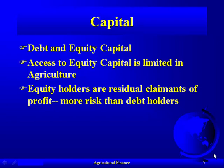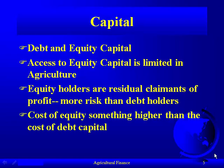Equity holders are the residual claimants of profit — they bear more risk than the debt holders. If you hold stock, you're in a much riskier position. For example, if you have stock in a company like Enron and it goes under, you may get pennies on the dollar, whereas debt holders have first claim on any assets. Equity holders only get anything after all debt holders are paid off.